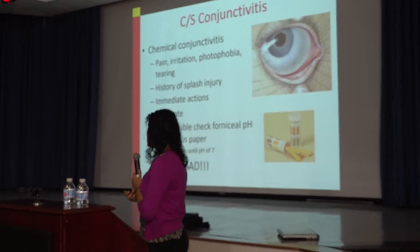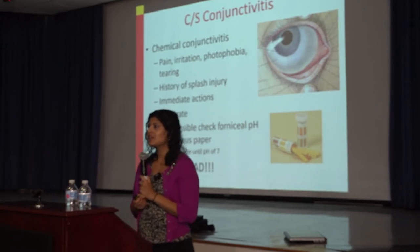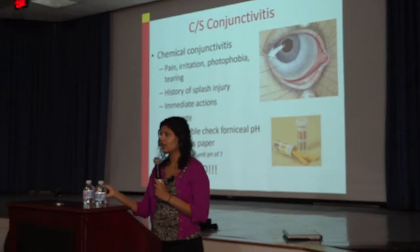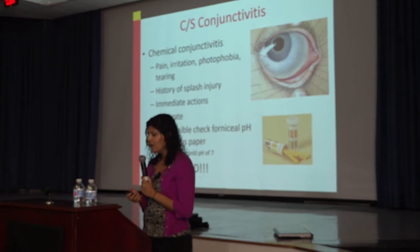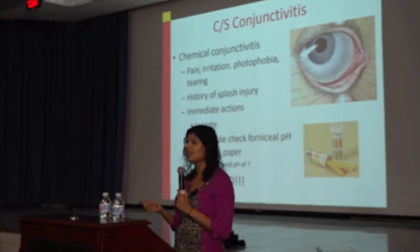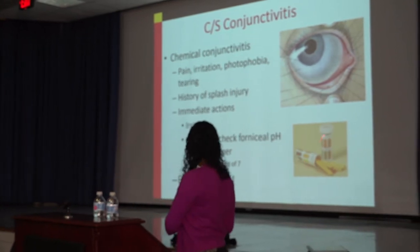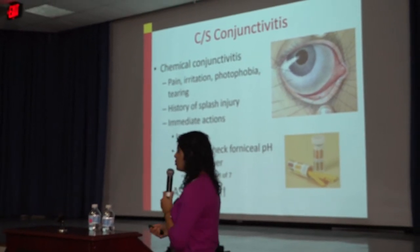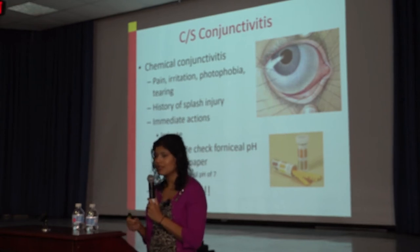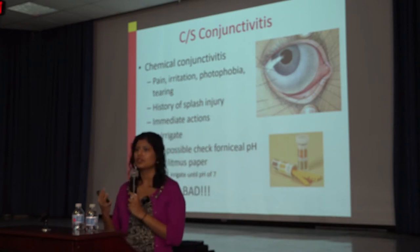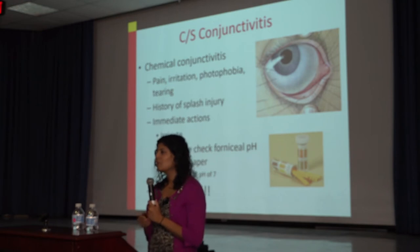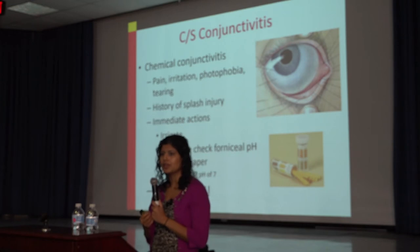Chemical conjunctivitis — you'll be surprised how often you see this, especially in urban settings, with splash injuries from cleaning equipment or field work. If someone presents with that history, immediately try to irrigate the eye — even a bag of normal saline is sufficient. If you have pH strips, check the fornix: pH of seven is normal. Keep irrigating until the pH normalizes. Alkali is much worse than acid because it penetrates deeper into the layers of the eye.